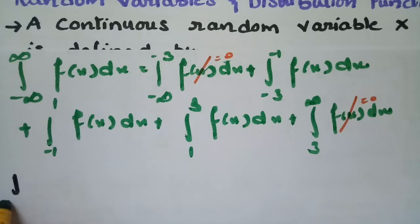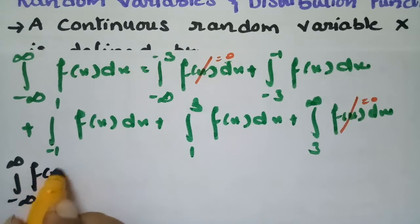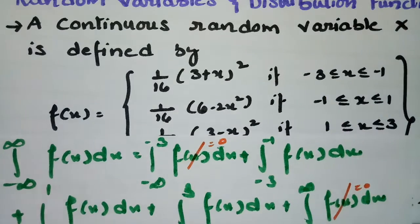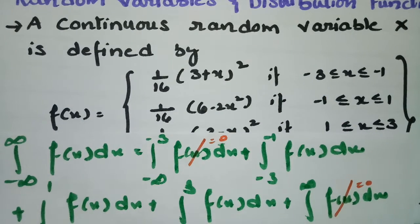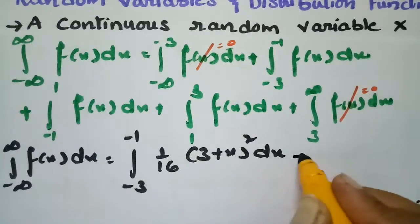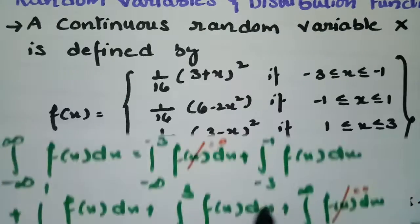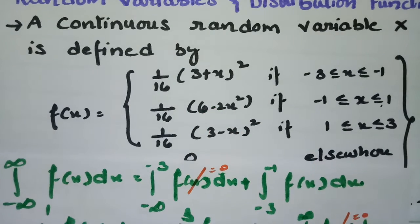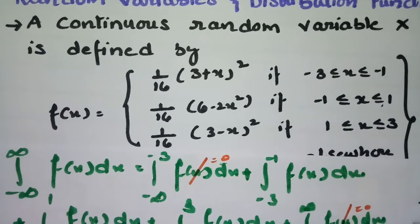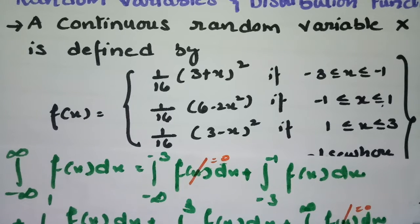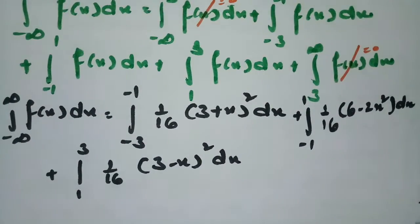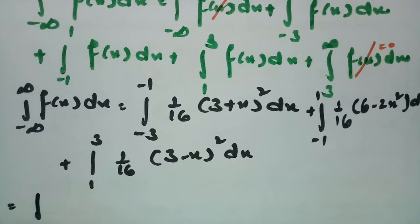Substituting the values: the integral from -∞ to +∞ of f(x) dx equals the integral from -3 to -1 of (1/16)(3 + x)² dx, plus the integral from -1 to 1 of (1/16)(6 - 2x²) dx, plus the integral from 1 to 3 of (1/16)(3 - x)² dx.